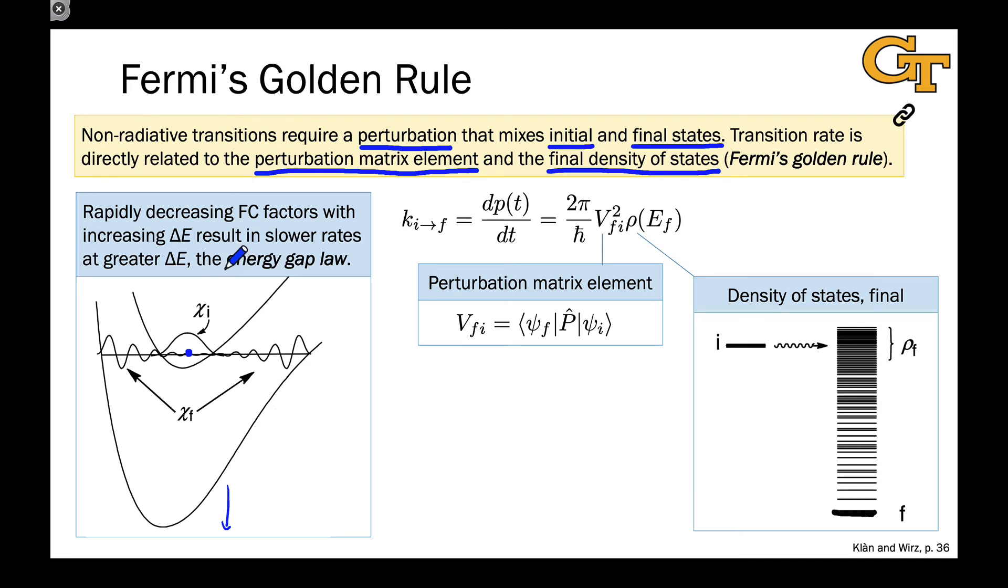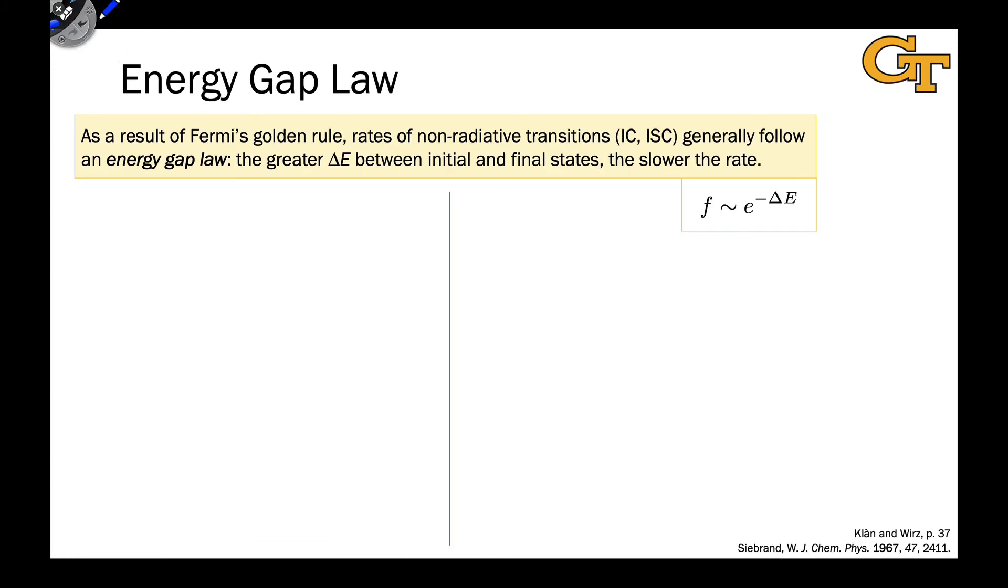And this results in an energy gap law that describes qualitatively the dependence of the rate constant on the energy gap between the electronic initial and final states. In other words, we're looking at the ground vibrational levels of the initial and final states when we talk about this energy gap law. The greater that gap is, the slower the transition is. And this is what we call the energy gap law.